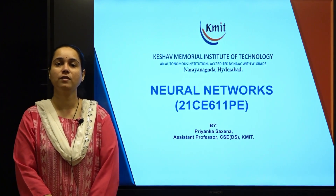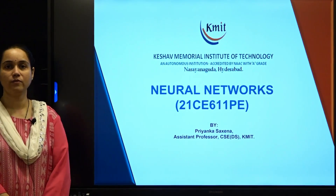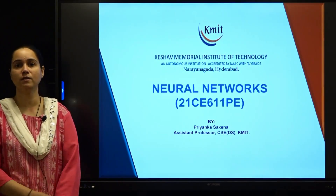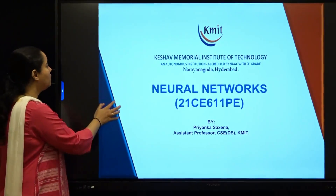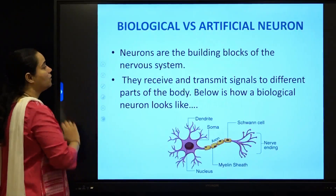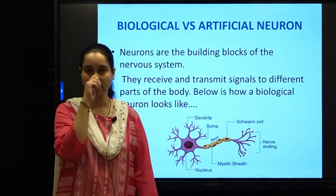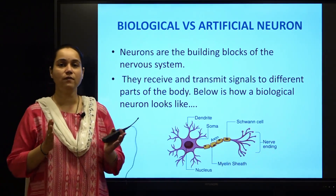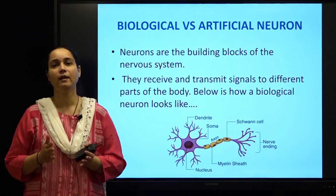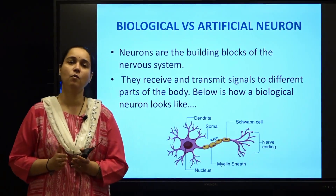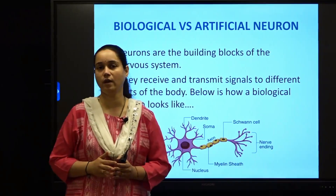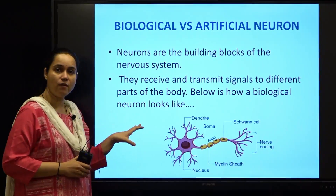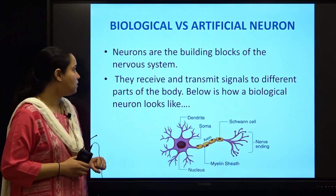Hello, dear students. Since we have seen all the introductory part relevant to our subject of neural networks, we will slowly now dive into what exactly neural networks are. We have a very interesting topic today. We are going to see what are the differences between a biological neuron and an artificial neuron. We are going to see first what is a biological neuron and then what is an artificial neuron and then how neural networks emerged out of artificial neuron interconnection. Before I dive into this, let us have a brief introduction to biological neuron.